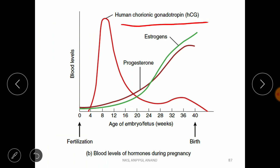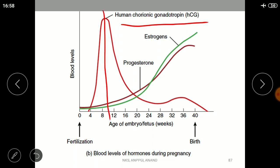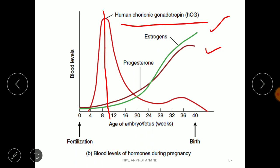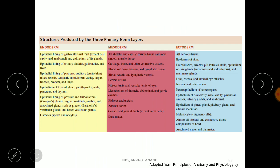Looking at the graph: HCG concentration is very high up to about the ninth week, then declines, while estrogen and progesterone concentrations are also shown across the pregnancy. A detailed slide lists the three germinal layers — ecto-, meso-, and endoderm — and the tissues and organs each gives rise to. Students should go through this carefully, as different exams ask about the origin of different organs.